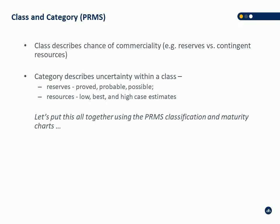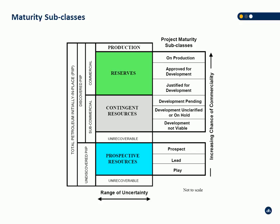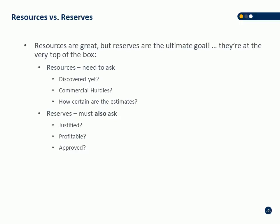This table shows the project subclasses straight out of PRMS. It's slightly different than COGI — the only difference is that 'development unclarified or on hold' is a single box in PRMS, whereas in COGI it's split into two categories. You've got prospect, lead, and play as maturity subclasses for prospective resources. Contingent resources have development pending, development unclarified or on hold, and development not viable. Reserves have on production, approved for development, and justified for development — basically talking about the level of corporate commitment in the reserves.